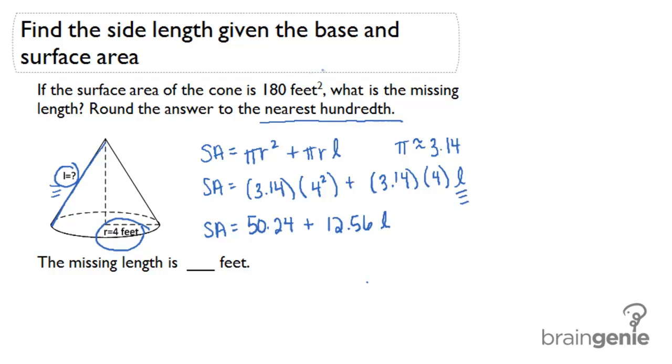But first I need to remember that I know the surface area. That's 180 square feet. So if I substitute that in for surface area I'll have 180 equals 50.24 plus 12.56 times L. If I subtract both sides by 50.24 and then divide by 12.56, 180 minus 50.24 equals 129.76. And if I divide both sides by 12.56 I'll get L equals approximately...